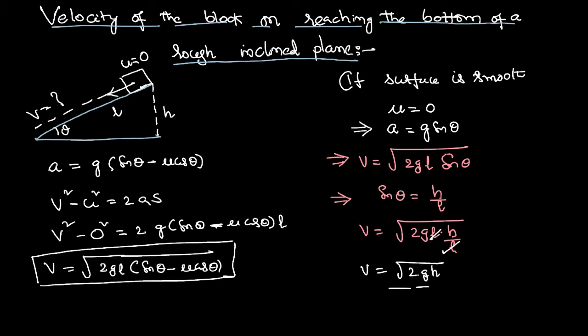If we have studied kinematics a little bit, this is nothing but the velocity acquired by a freely falling body from a certain height h. That means if there is no friction, it doesn't make a difference whether the body is falling on an inclined plane or falling straight.